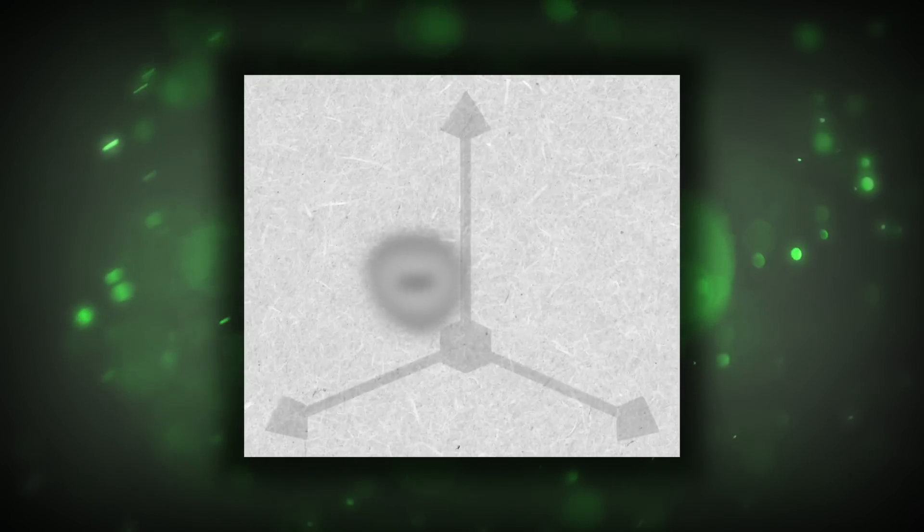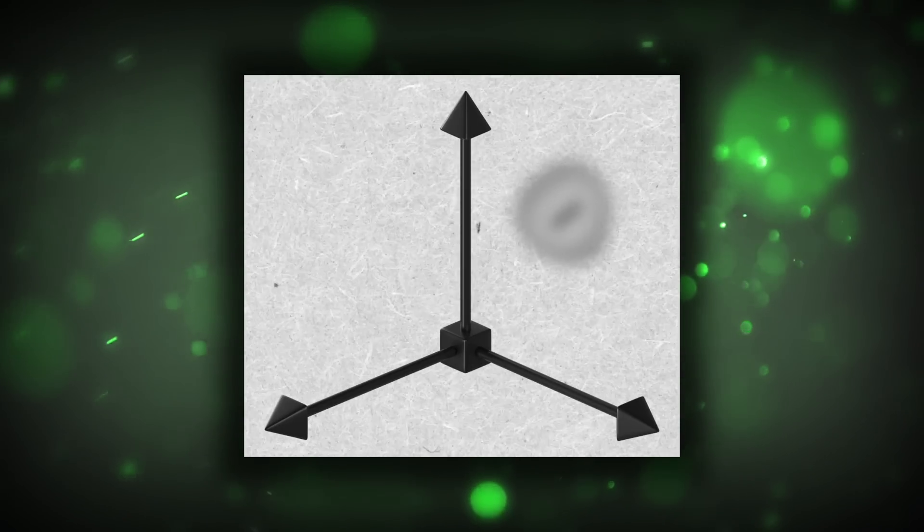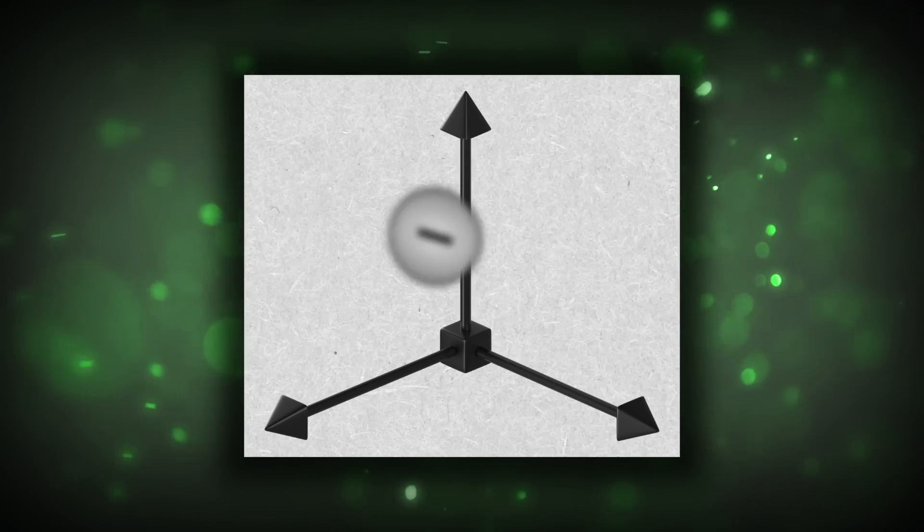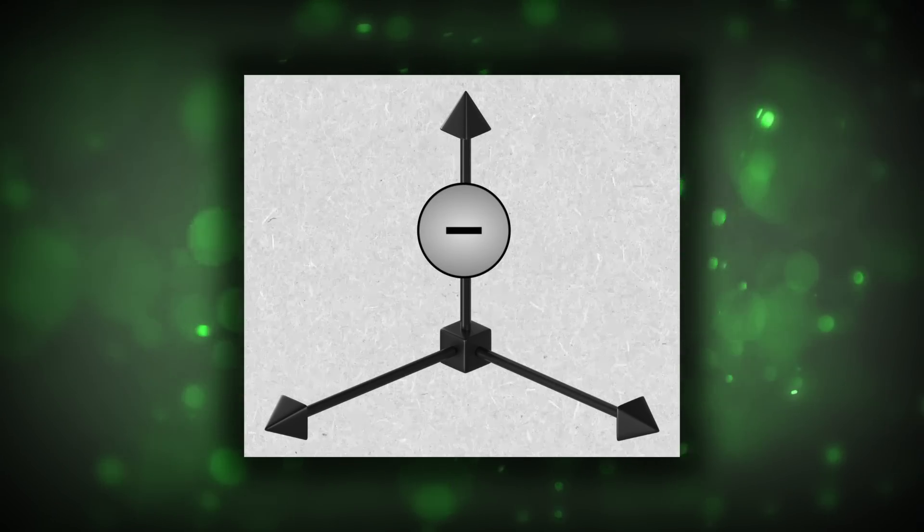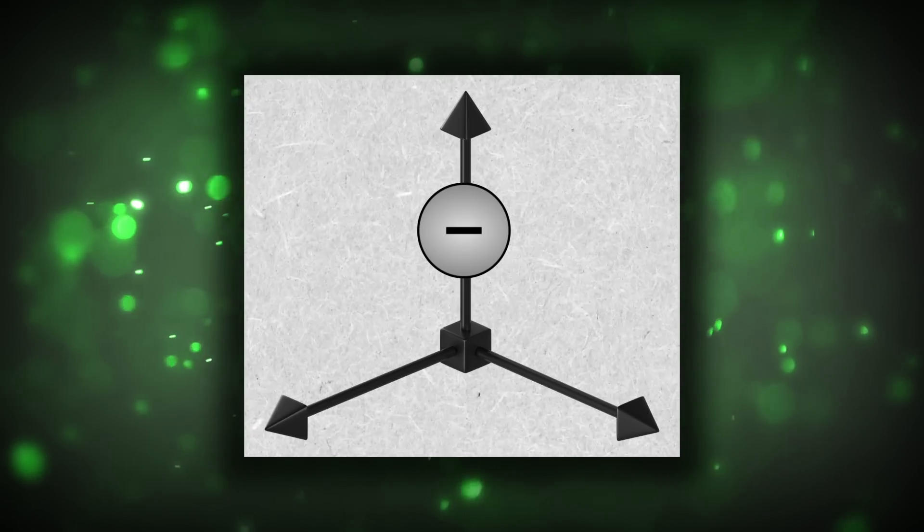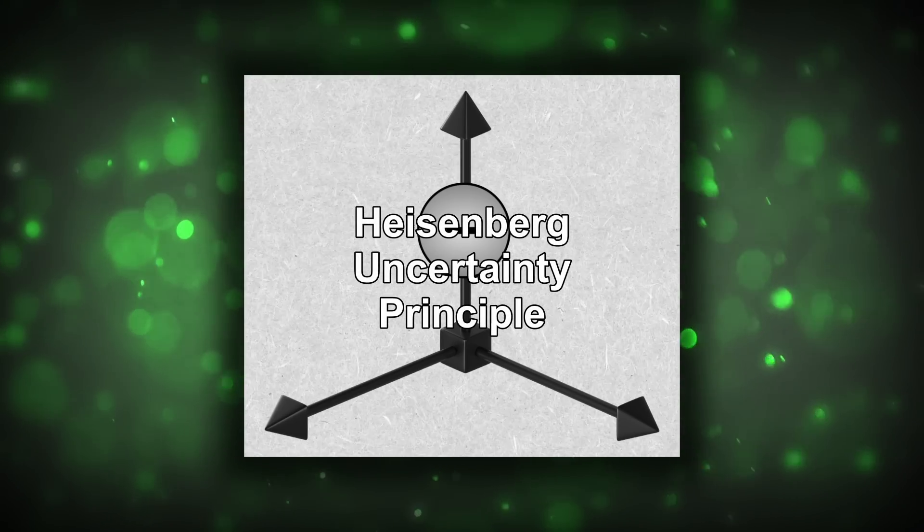it's impossible to measure both an electron's position and its velocity with a high degree of certainty. This is because a wave cannot have a specific position in space like a particle can. The more precisely you know the position of an electron, the less precisely you can know its velocity and vice versa. This became known as the Heisenberg uncertainty principle.